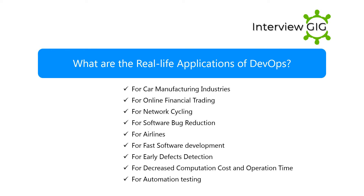What are the real-life applications of DevOps? Applications include: car manufacturing industries, online financial trading, network cycling, software bug reduction, airlines, fast software development, early defects detection, decreased computation cost and operation time, and automation testing.